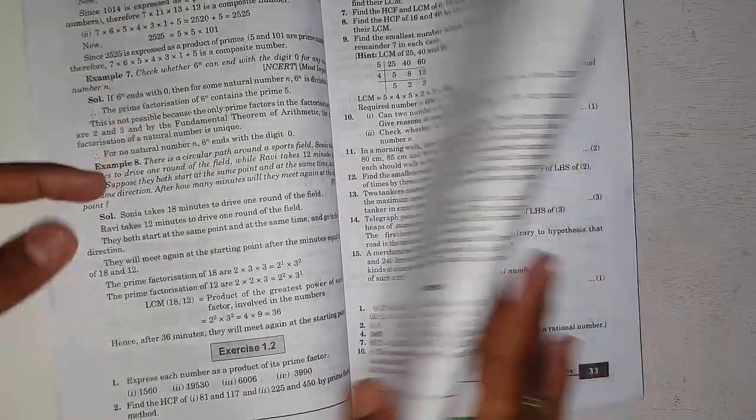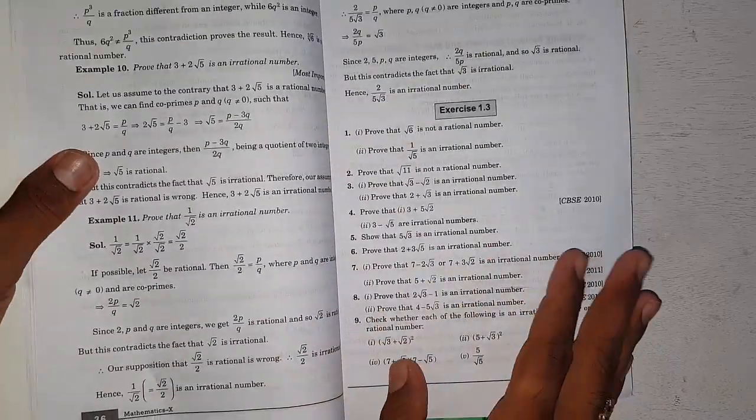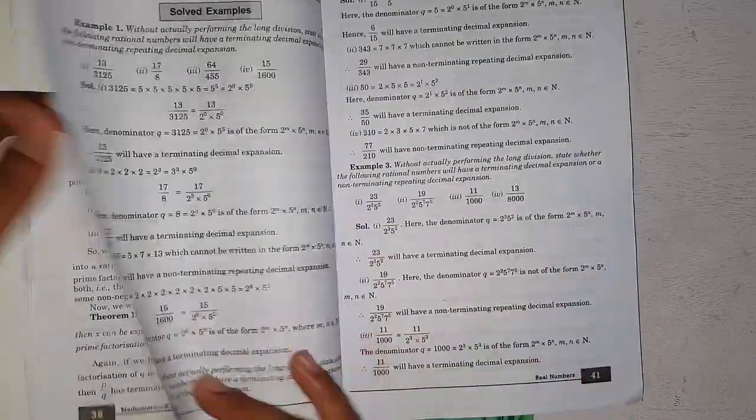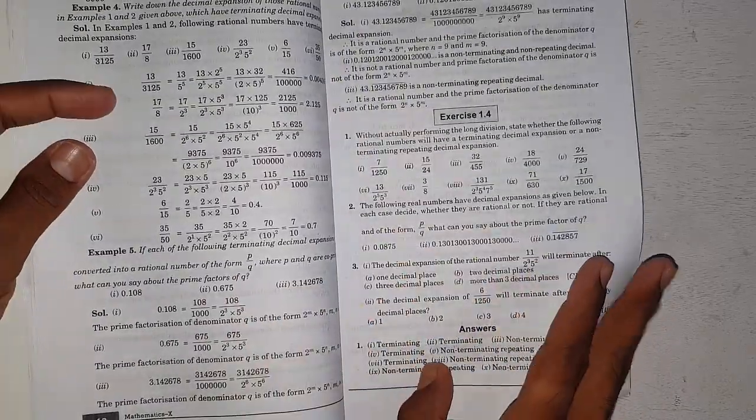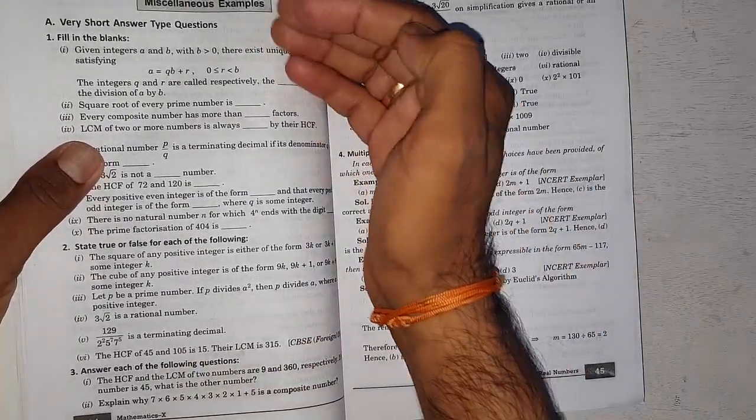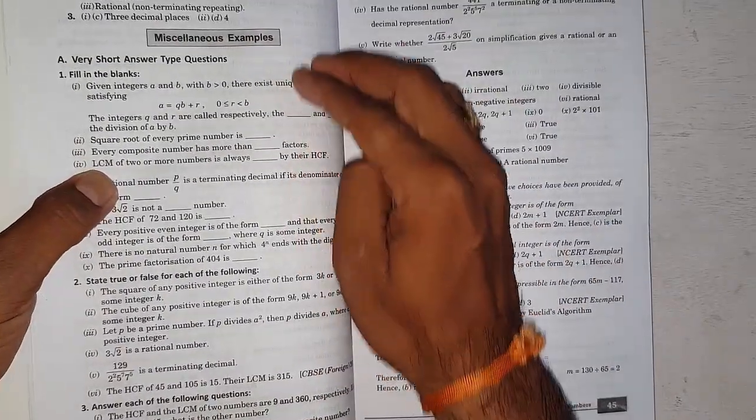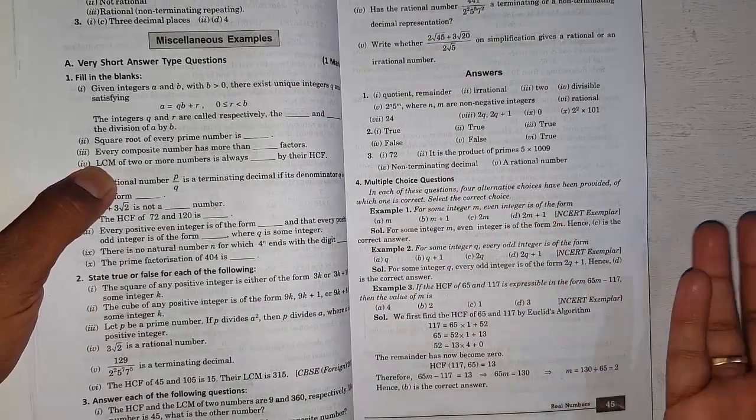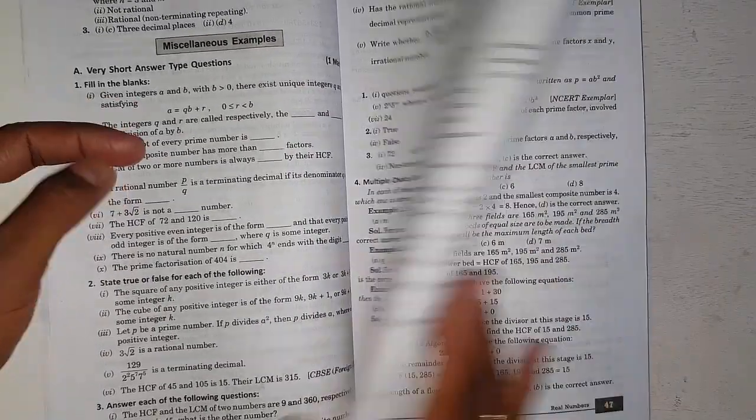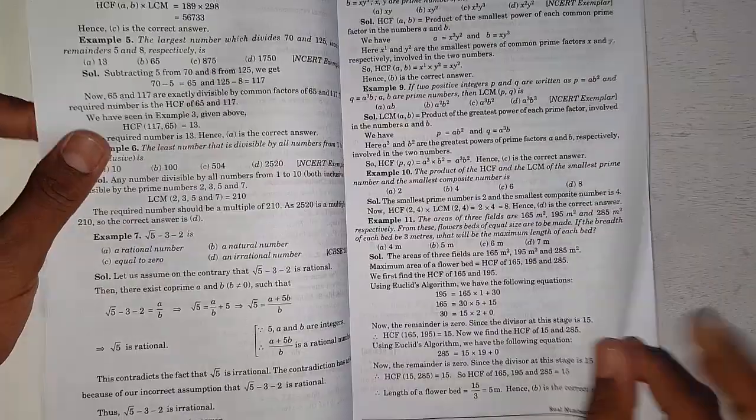After explaining all the exercises like 1.3 and 1.4, they provide miscellaneous examples. In these miscellaneous sections, they've given more than 50 questions in all chapters.